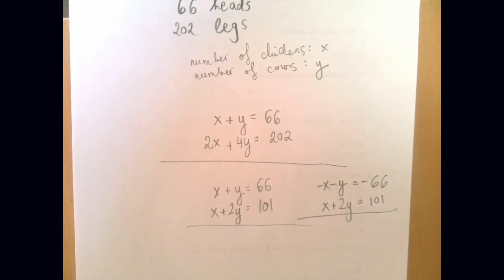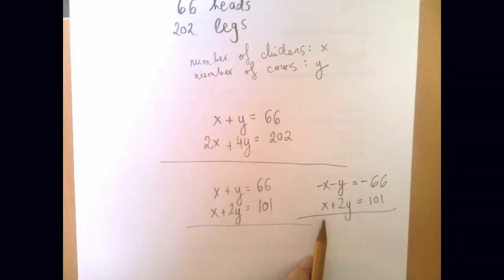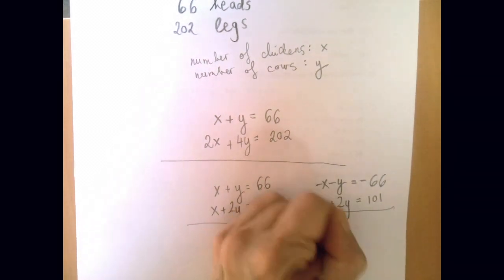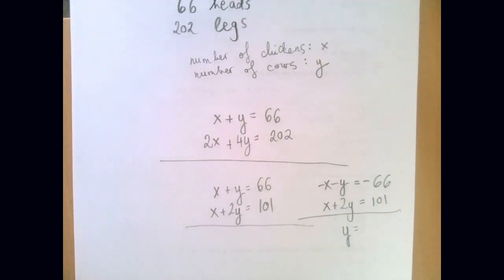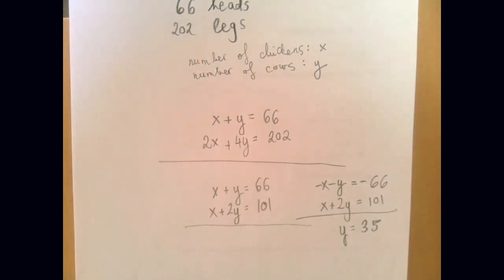Now when we add the two equations, x cancels out. And y falls into our lap. 101 minus 66. So we get y equals 35.